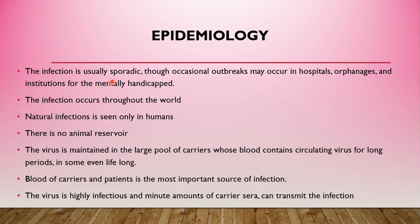Moving to epidemiology: the infection is usually sporadic, though occasionally outbreaks may occur in hospitals, orphanages, and institutions for the mentally handicapped. The infection occurs throughout the world and is seen more in advanced countries than in developing countries. Natural infection is seen only in humans; there are no animal reservoirs. The virus is maintained in large pools of carriers whose blood contains circulating virus for long periods, in some even lifelong.